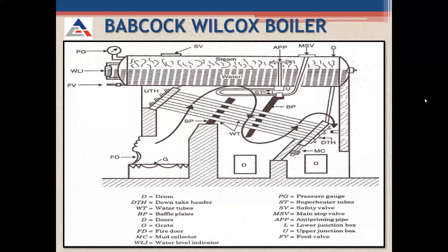The Babcock Wilcox boiler is a water tube boiler. These are the different parts: the main drum where water is supplied from an external source, the water tubes, the grate, the fire door, and baffle plates. There is also a downtake header and an uptake header. Water from the drum comes to the downtake header, where hot gases surround all the tubes.